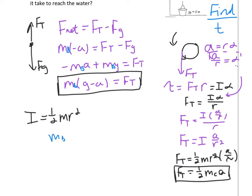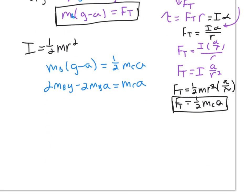Giving us mb times g minus a equals one half mc times a. From here, it's just algebra. So 2 mb g minus 2 mb a equals mc a. Getting all the a's to the same side, 2 mb g equals mc a plus 2 mb a. Two mb g over mc plus 2 mb equals a.